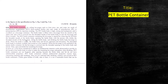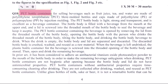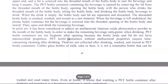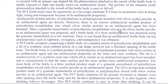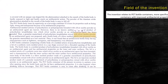Next is to talk about the field of the invention. The field of the invention is: 'The present invention relates to PET bottle containers.' More particularly, the invention relates to PET bottle containers with enhanced antibacterial properties, or the usage of silver zeolite as mentioned in the invention disclosure form.